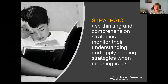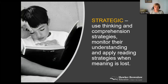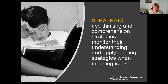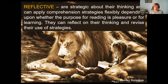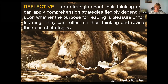The next stage is becoming more strategic — they're actually able to use different comprehension strategies such as making predictions, asking questions, inferring, drawing on background knowledge, and monitoring their understanding. They apply reading strategies when meaning is lost. The final phase is more sophisticated — in this reflective phase they're far more strategic about their thinking and can use comprehension strategies flexibly, moving in and out of them, very conscious of which types of reading strategies to use for different purposes.